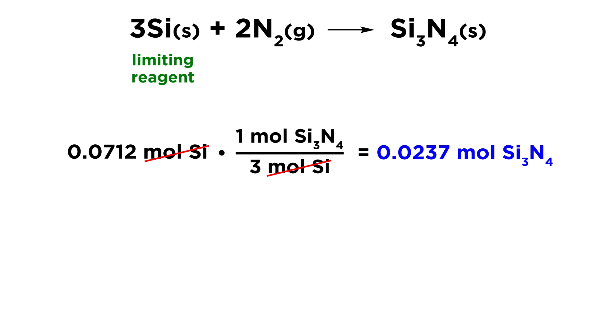and now we need the theoretical yield. Well, fortunately, using our second method, we've already calculated that, because what the theoretical yield means is it is the maximum amount of product that is physically possible to form if all of the limiting reagent is used up and converted into product. So that involves that calculation that we just did. We take our moles of the limiting reagent, and we use the stoichiometric coefficients to get the moles of product that we can expect from that amount of the limiting reagent that we have. So that is our 0.0237 moles of product,